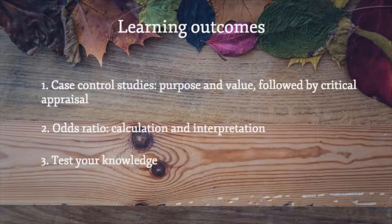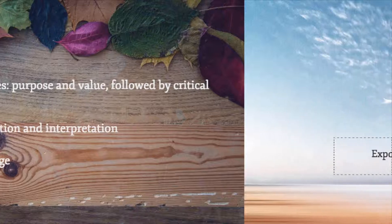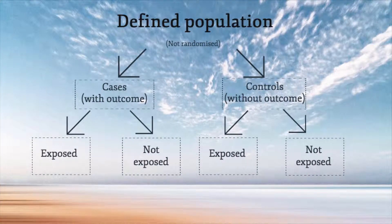Finally, there will be a link to a short quiz at the end of this video which will give you the opportunity to test your knowledge. A case control study is retrospective. Instead of identifying people who have and have not been exposed to a factor of interest, as in a cohort study, we identify a group of cases — people who have the outcome of interest — and a group of controls — people who do not have the outcome of interest. We then study whether or not they have been exposed to a factor of interest, with a view to investigating whether the exposure may be causing the outcome.